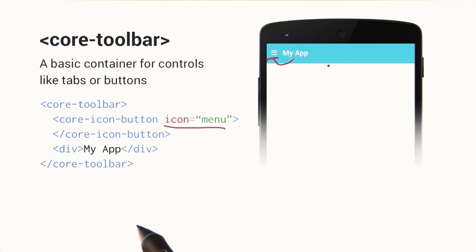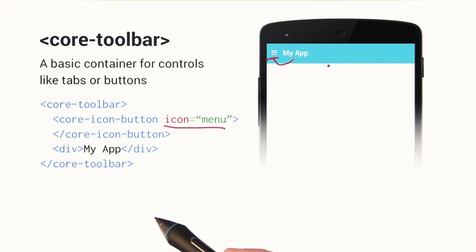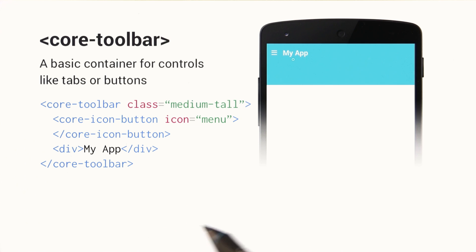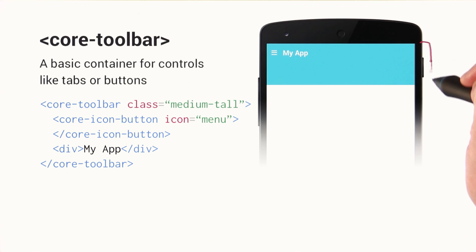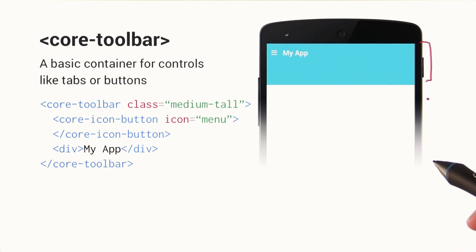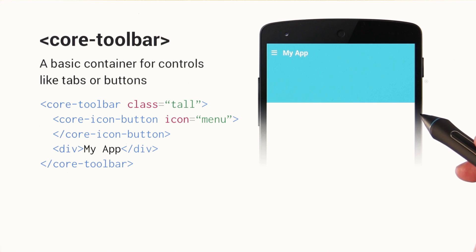The toolbar also comes with some built-in stylings. For instance, if we give it a class of medium-tall, you can see that it gets just a little bit bigger. And if we give it a class of tall, it'll get even larger.